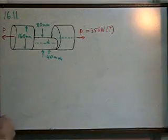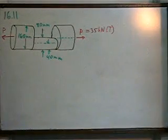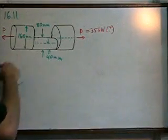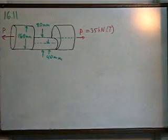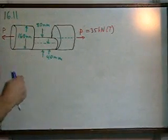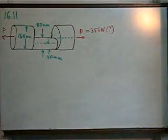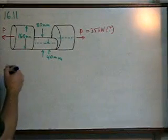The load is applied along the axis of the outer ends and along the edge of the center section, which means that this section here has an eccentric load with an eccentricity of 40 millimeters, the radius.